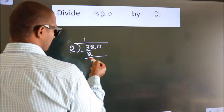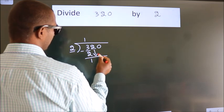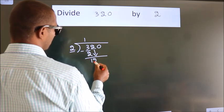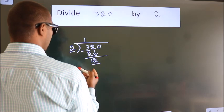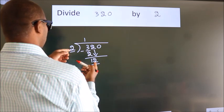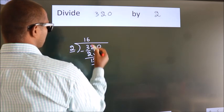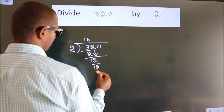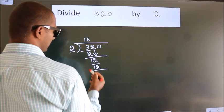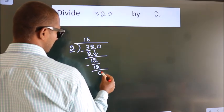After this, bring down the beside number. So, 2 down. So, 12. When do we get 12? In 2 table. 2, 6, 12. Now, we subtract. We get 0.